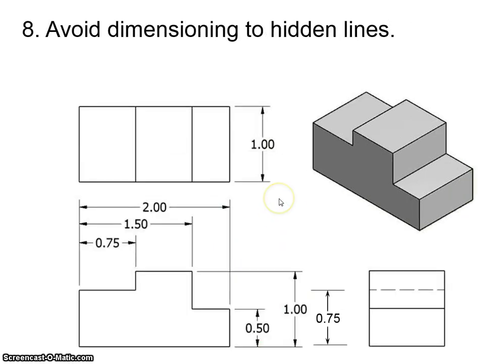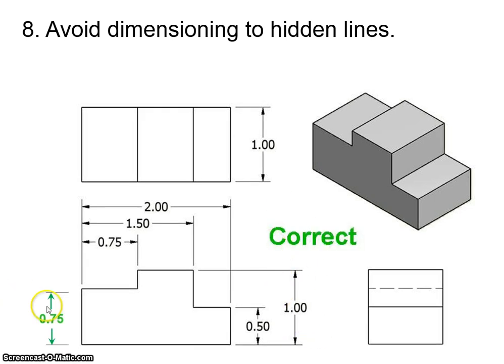Rule eight, avoid dimensioning the hidden lines. So you'll know that one of the questions on the pretest that you just took asks you to determine which view or what the mistake dimension was. Well, it turns out this is the one right here. This 0.75 dimension here is dimensioning to this hidden line. That's incorrect. You can't dimension to a hidden line. You have to dimension to object lines only. That's why that dimension belongs over here.